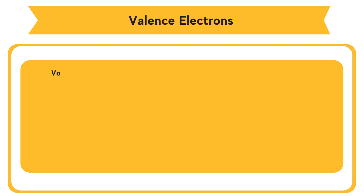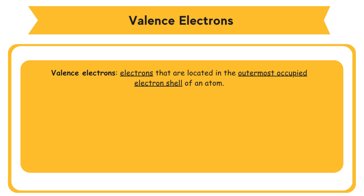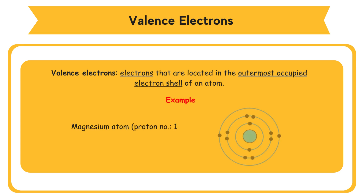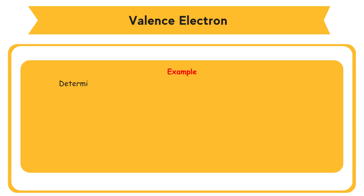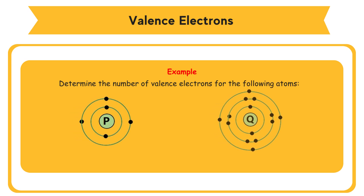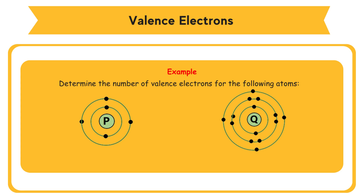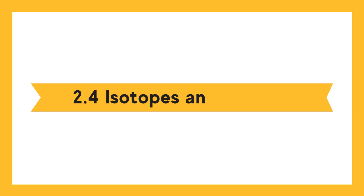Valence electrons are electrons located in the outermost occupied electron shell of an atom, also called the valence shell. The number of valence electrons can be determined from the electron arrangement. For example, a magnesium atom with proton number 12 has electron arrangement 2.8.2, giving 2 valence electrons. In the given examples: atom T has 3 valence electrons and atom Q has 4 valence electrons.